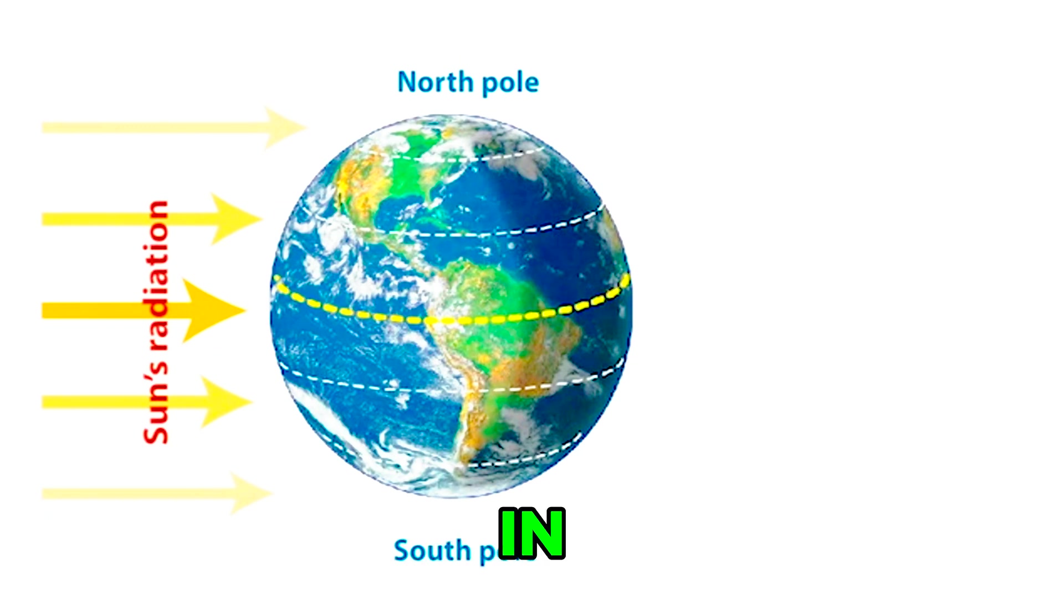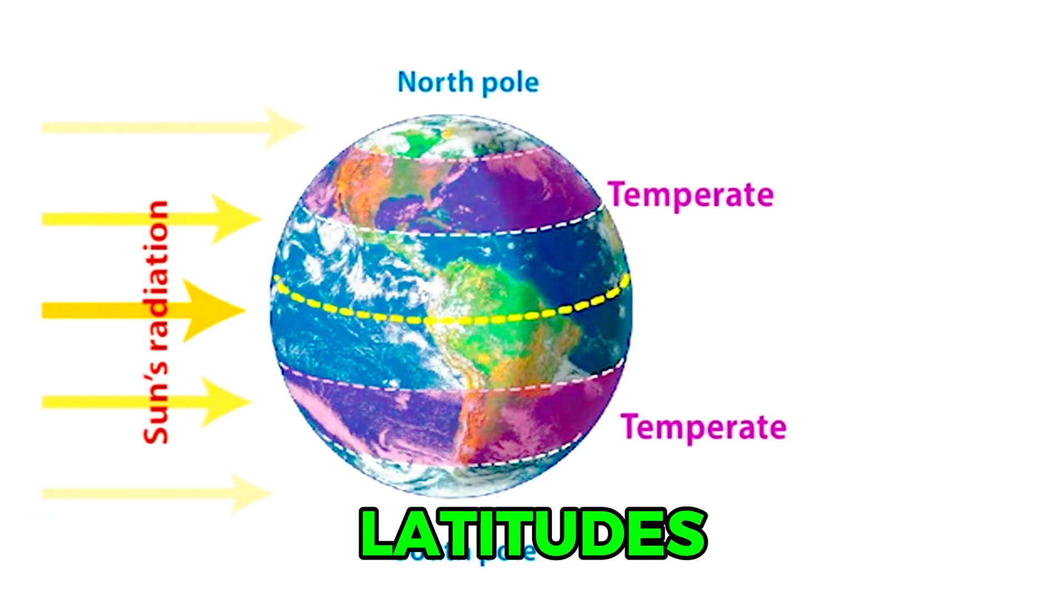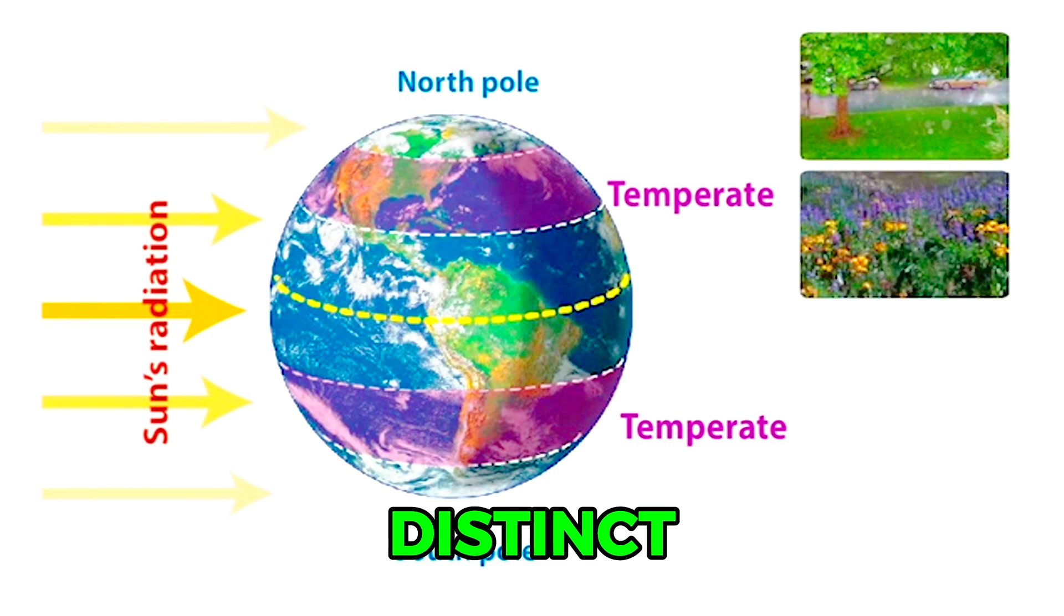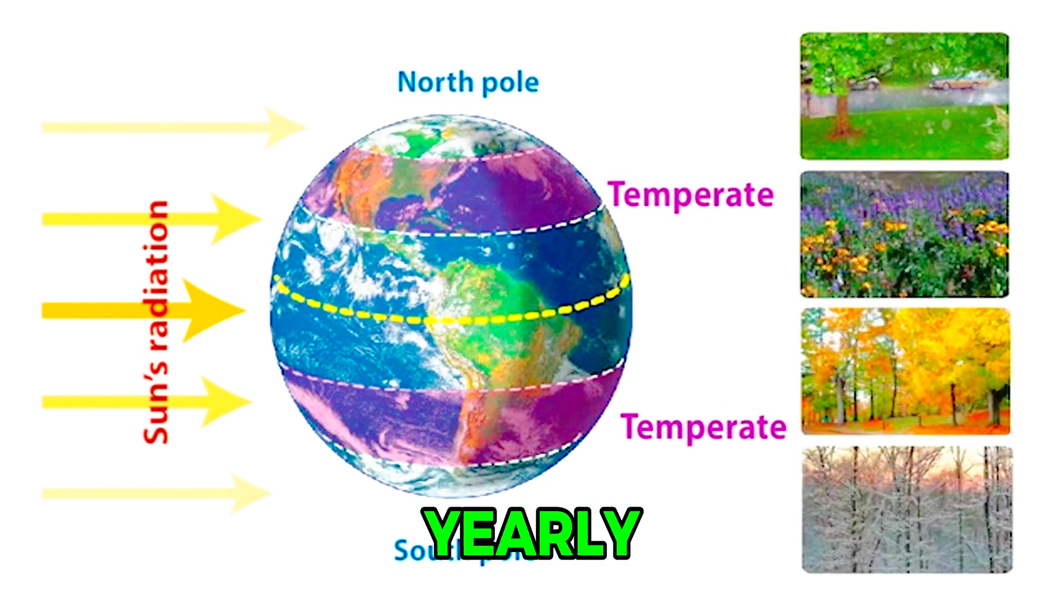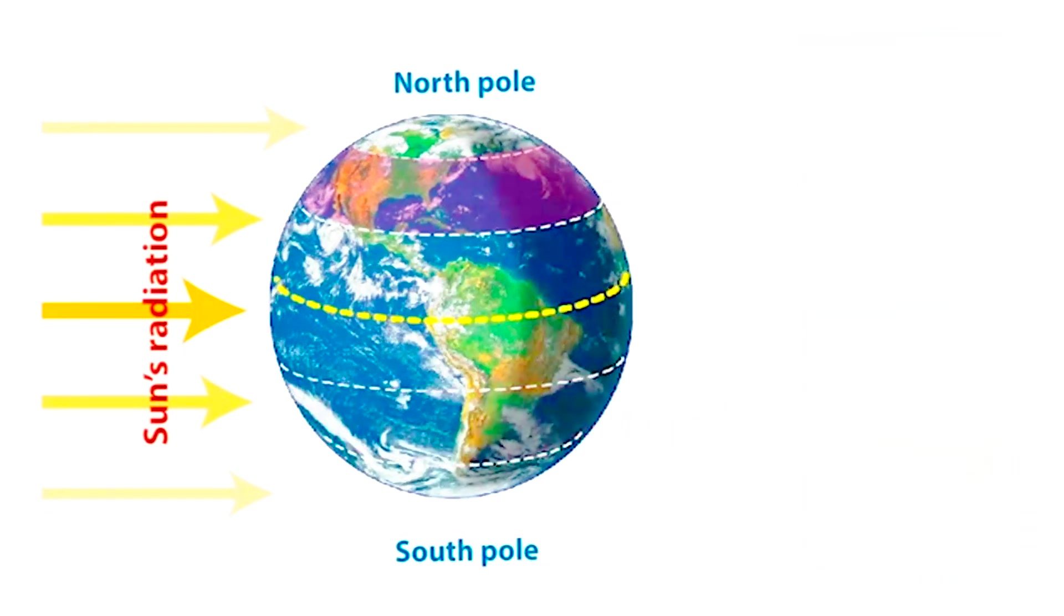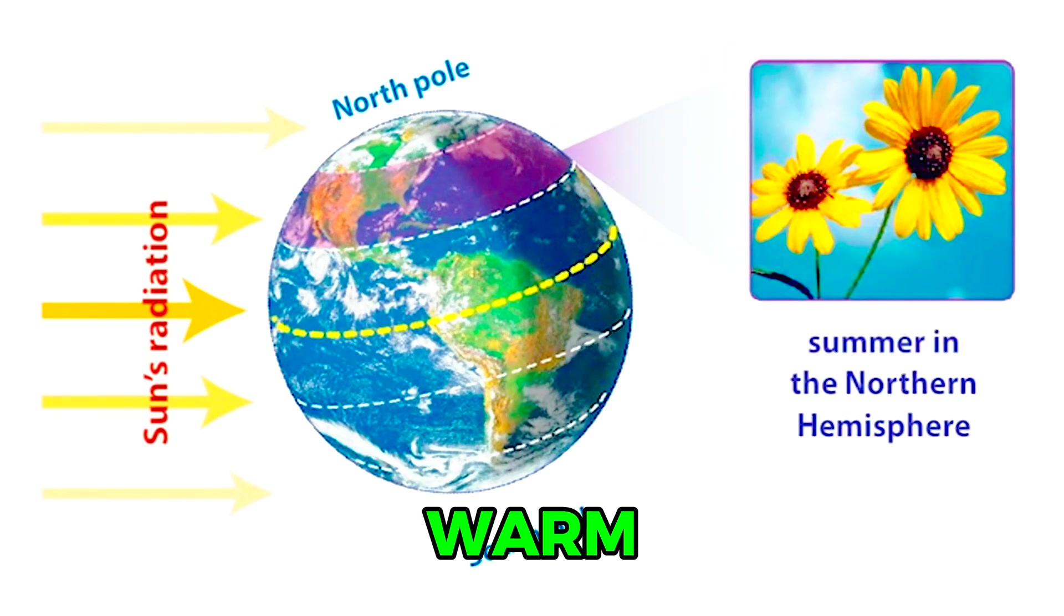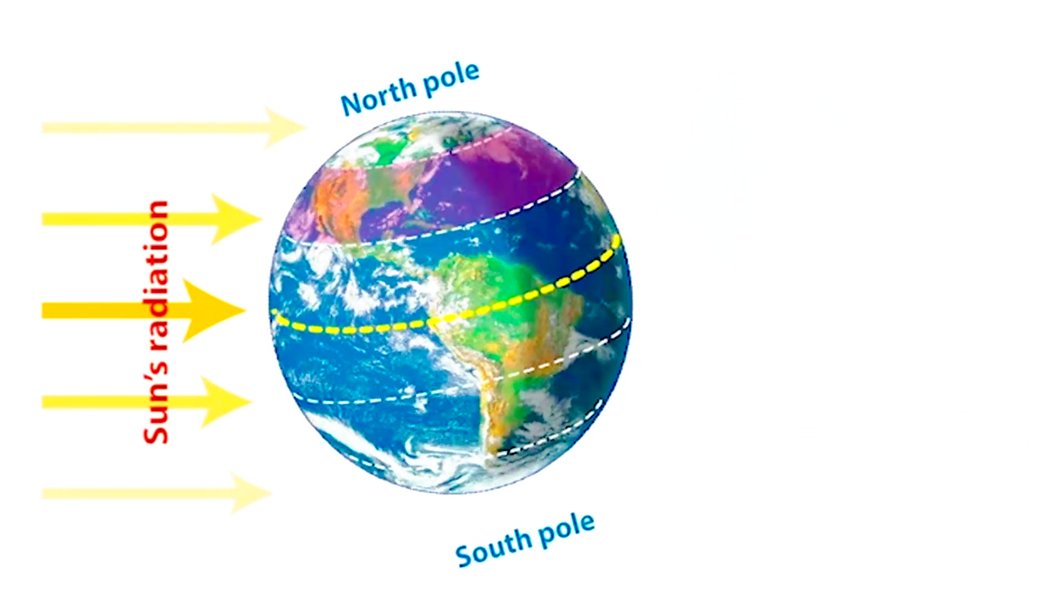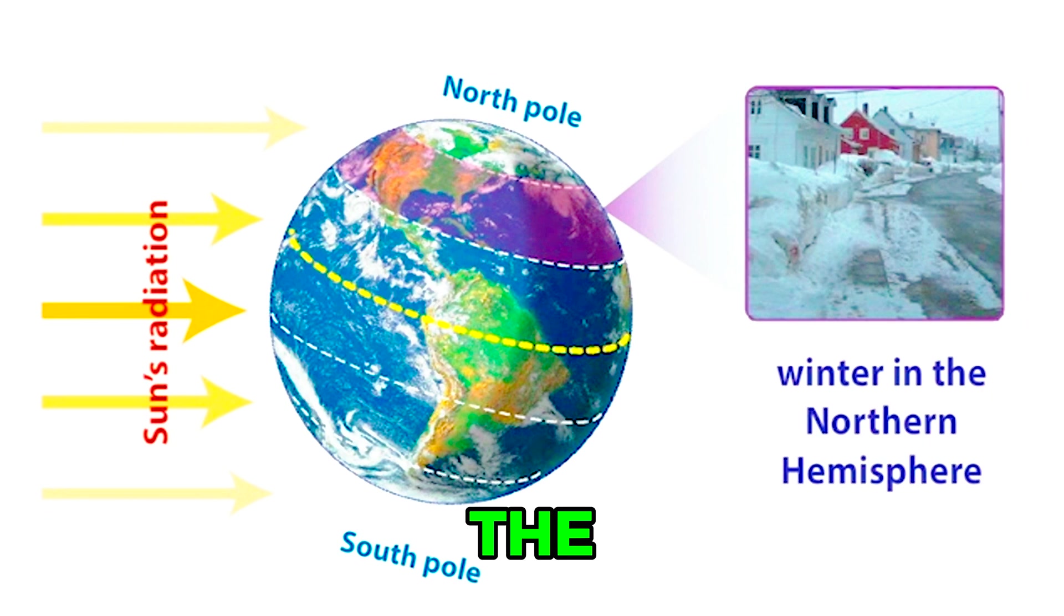Regions located in the temperate zone latitudes experience four distinct seasons during the Earth's yearly cycle. Summer temperatures are warm because the Earth is tilted toward the Sun, and there are more daylight hours. Winter temperatures are cold because the Earth is tilted away from the Sun, and there are fewer daylight hours.